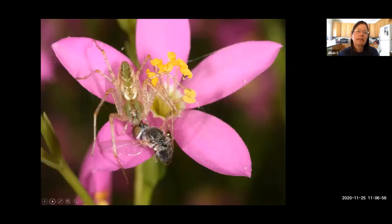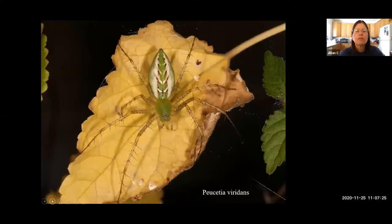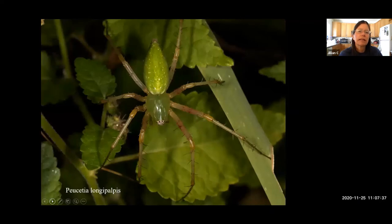Let's start with the green lynx spider. These spiders are frequently seen ambushing pollinators visiting flowers — for example, capturing a bombyliid fly. Found throughout the tropics and subtropics, they're often on prickly pear flowers in spring. In southern Arizona we have two species: Peucetia viridans, which is highly variable in color, and Peucetia longipalpis, which is generally green.